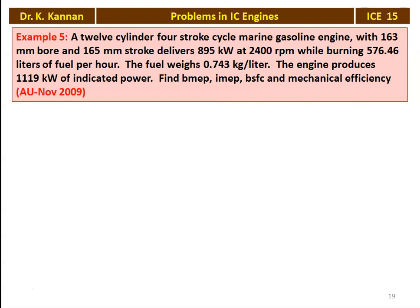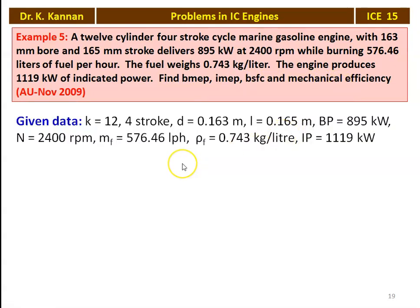Problem number 5 from the November 2009 question paper. A 12-cylinder 4-stroke cycle marine gasoline engine with 163 mm bore and 165 mm stroke delivers 895 kilowatts at 2400 RPM while burning 576.46 liters of fuel per hour. The fuel weight is 0.743 kilograms per liter. The engine produces 1119 kilowatts of indicated power. Find the brake mean effective pressure, indicated mean effective pressure, brake specific fuel consumption, and mechanical efficiency.